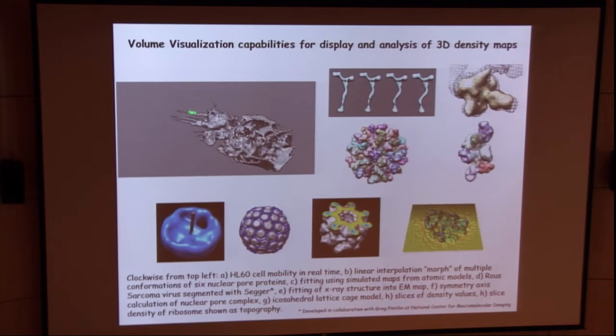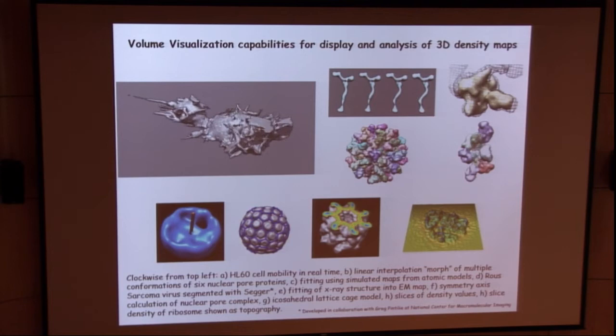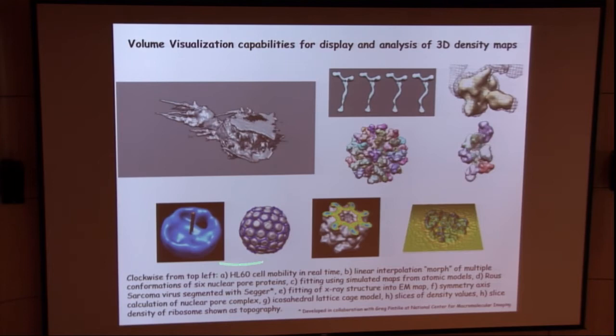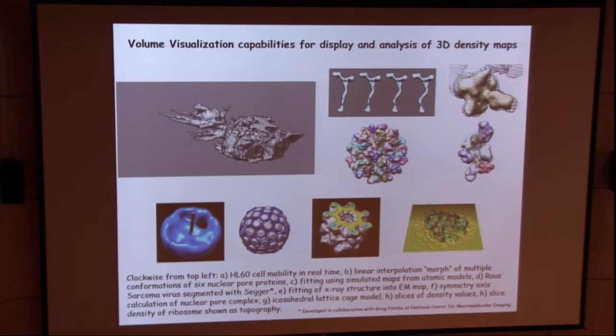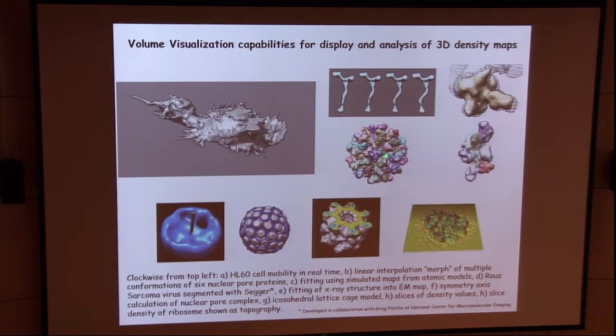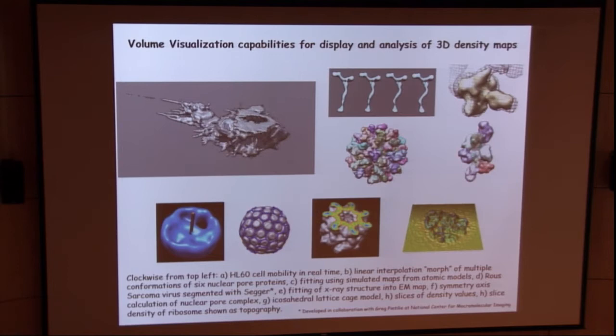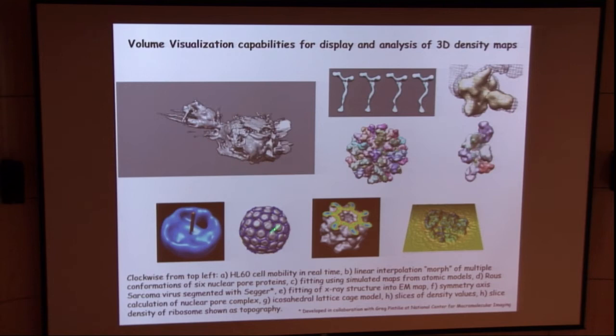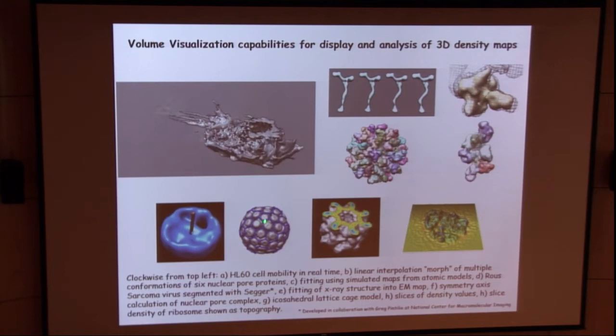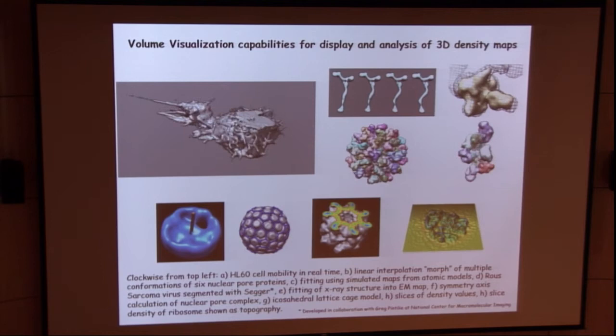A number of other displays from volume visualization. Some of those of you that are in the front can probably see some crystal structures here, and in here that have been docked into these lower-resolution electron micrographs. Here's an electron tomogram down here. Here's a cosahedral virus where we have built a cage around the virus, built a model to model the symmetry within the virus. So I don't propose to talk about these in really any detail, just to show you sort of the breadth of volumetric visualization capabilities within Chimera.